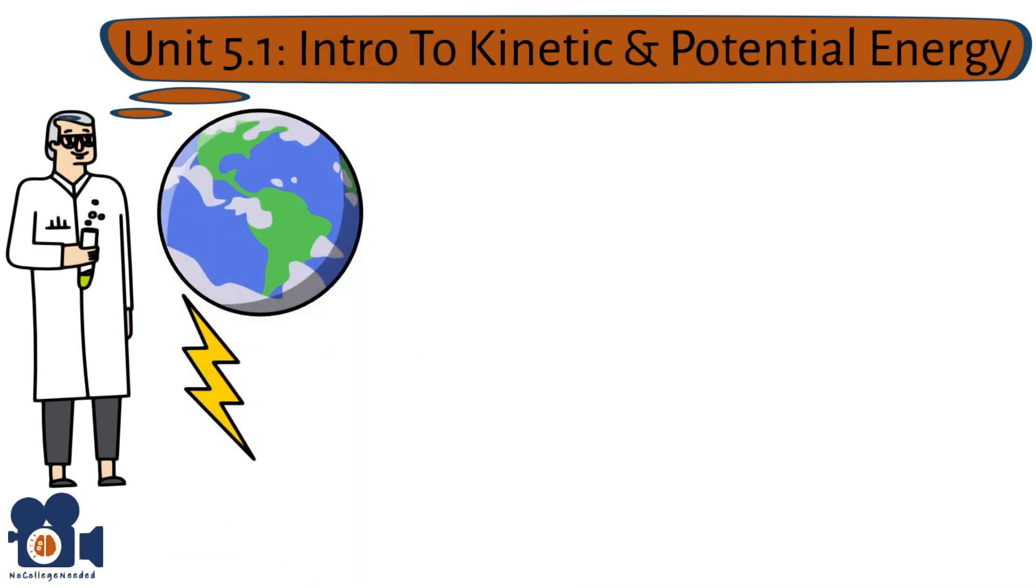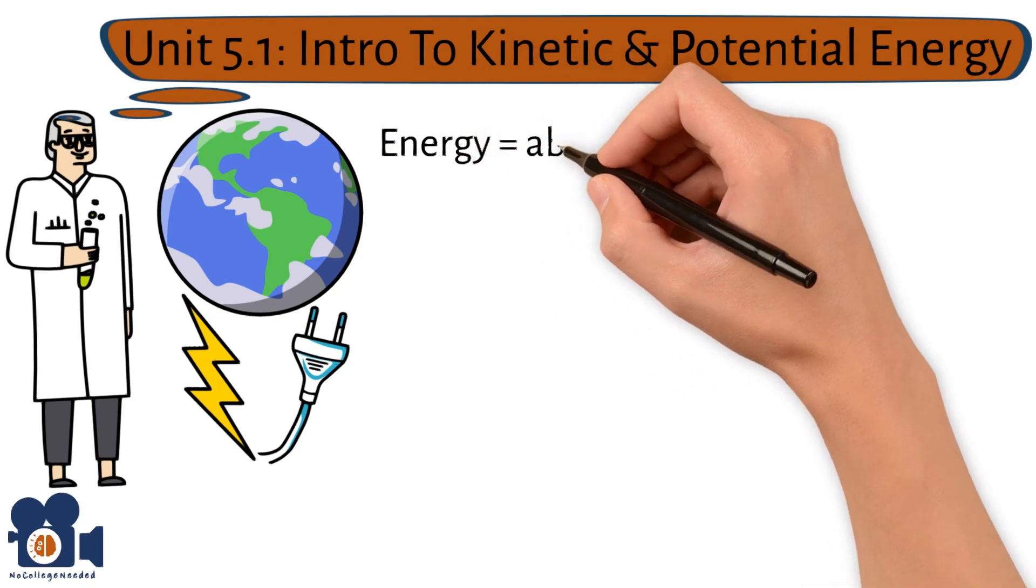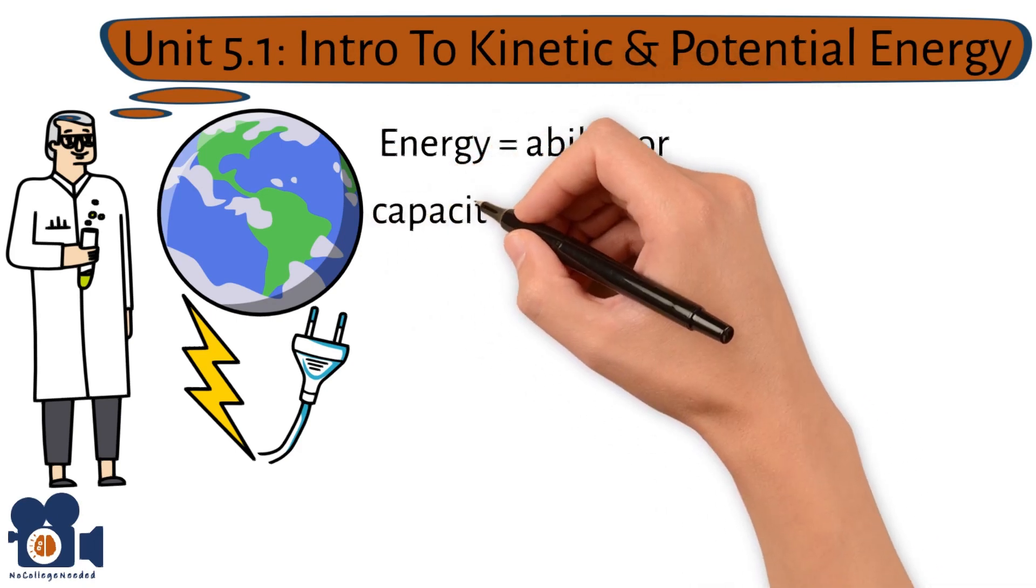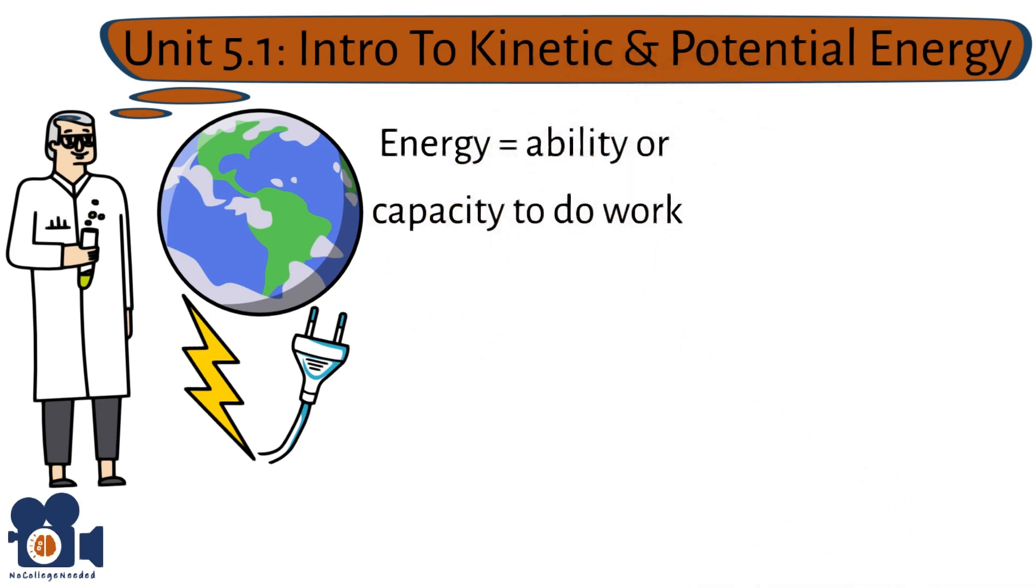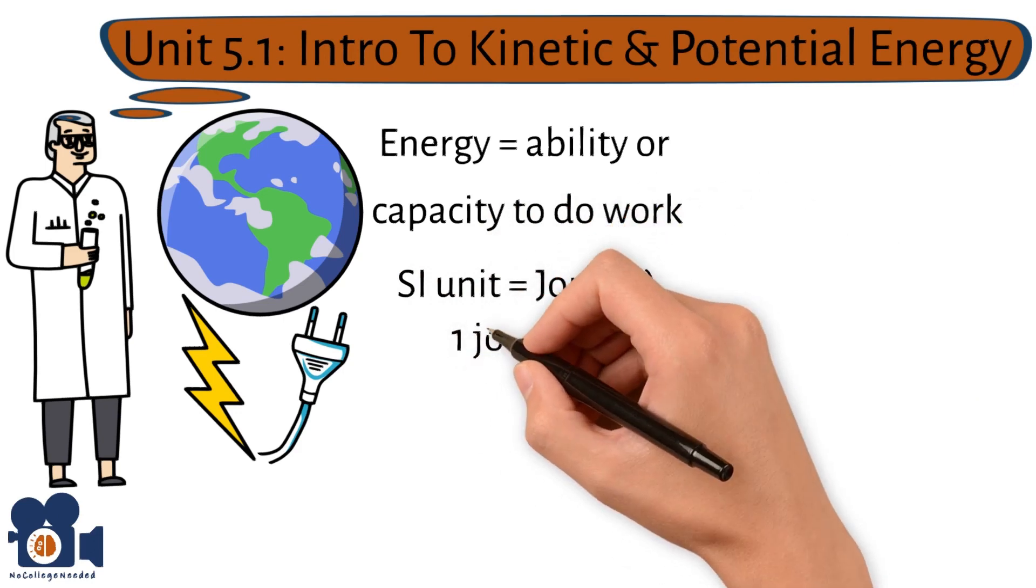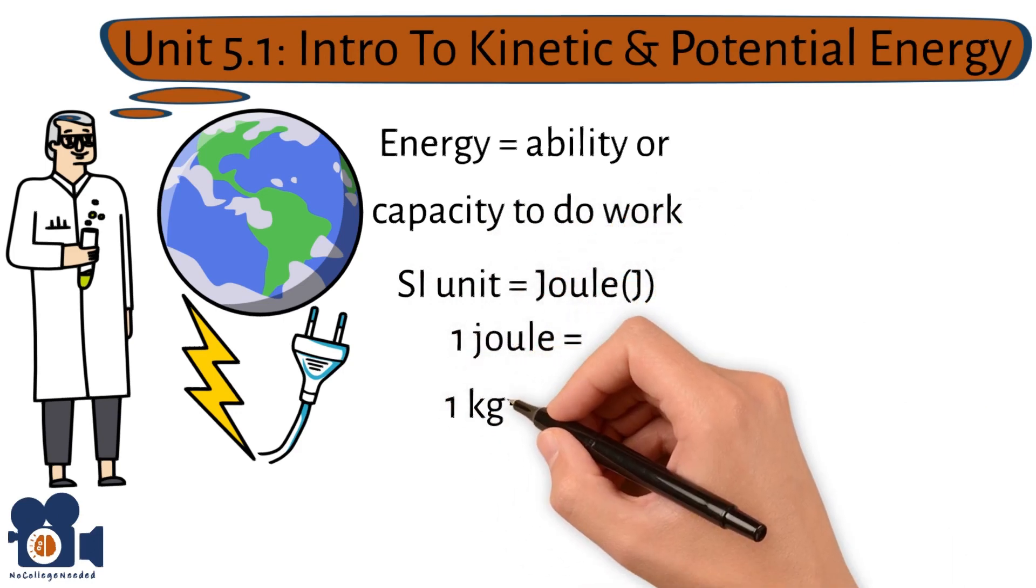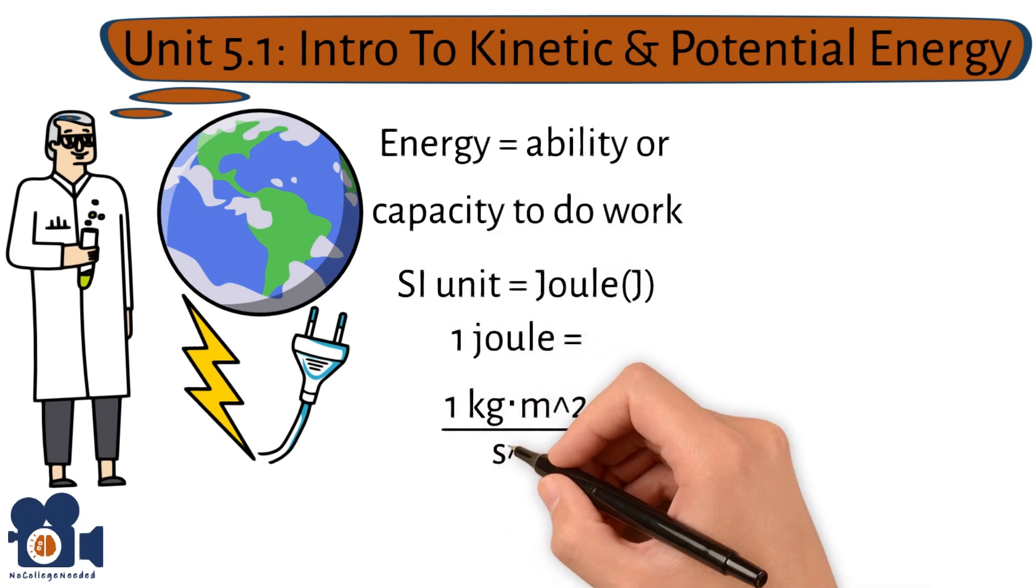Our entire world is connected through types of energy and humanity thriving is dependent on abundant energy. By definition, energy is a quantity used to describe the ability or capacity to do work, and the SI unit for it is joule J with one joule equaling one kilogram times meter squared divided by second squared.